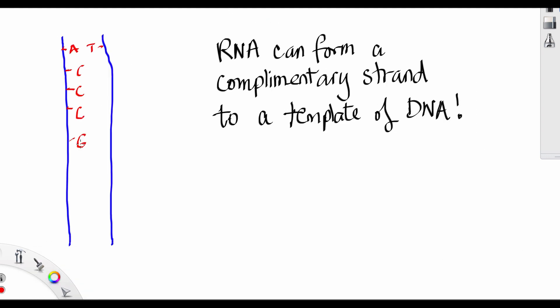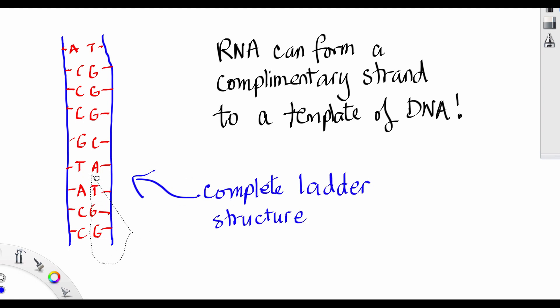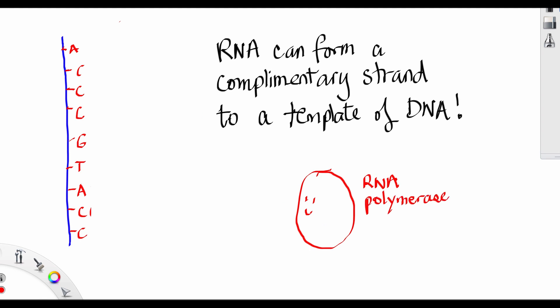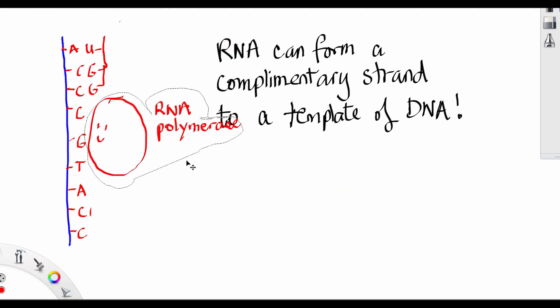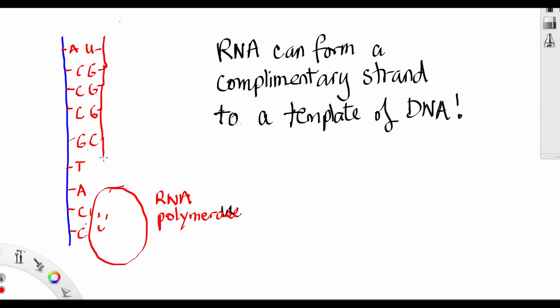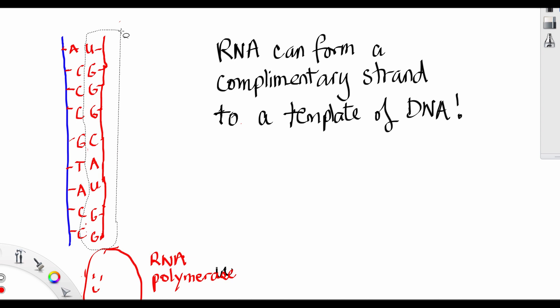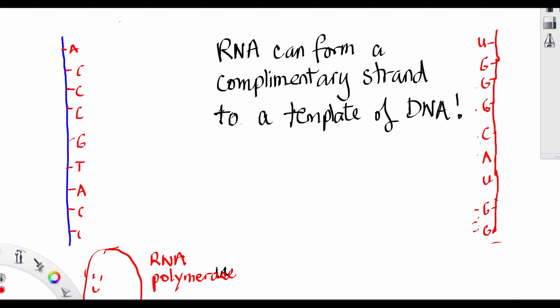RNA can form a complementary strand to the template of DNA. So suppose this is a piece of DNA. If we take out one side of DNA, then RNA polymerase can go and construct a complementary strand of RNA. And now we have a single strand of RNA that was made from the DNA.